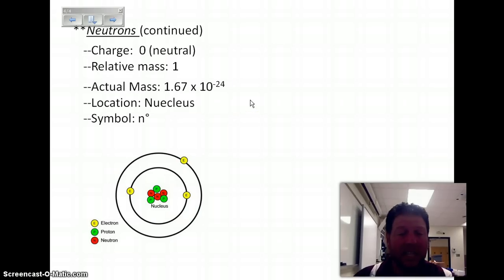The actual mass, just like the proton, is 1.67 times 10 to the negative 24. The location, as we said before, is the nucleus. And the symbol is N with a little zero showing neutral. And here is the Bohr model of the atom.